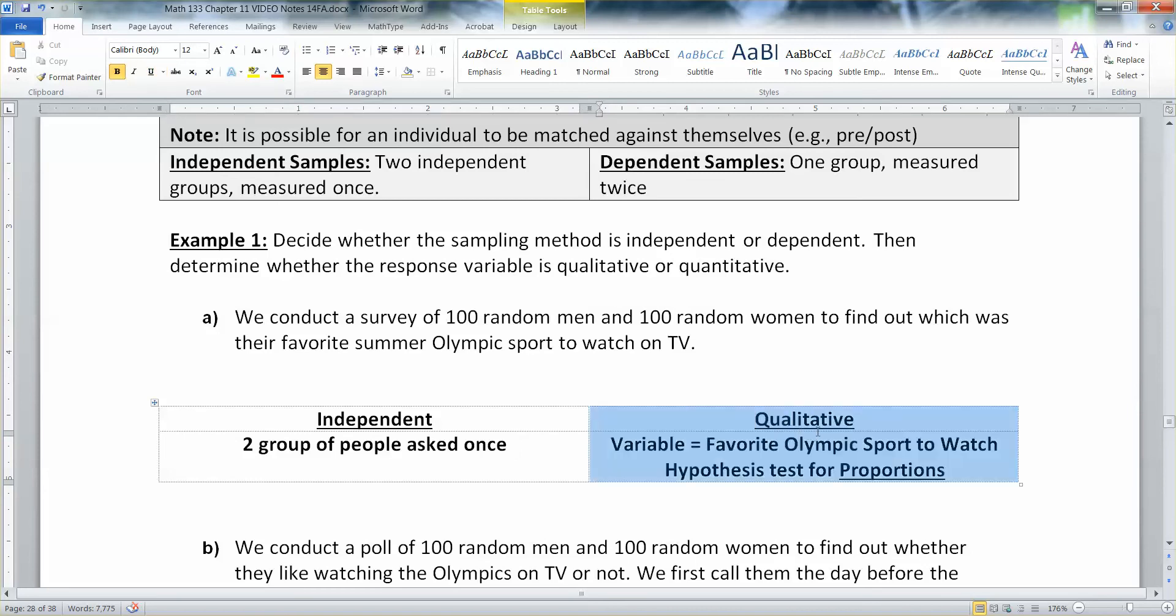This is a qualitative variable here. Because you're asking them, what's your favorite sport to watch? Well, this is in summertime, so gymnastics or swimming or track or whatever. Then the hypothesis test is for proportions. If you're doing qualitative variables, it's for proportions. Quantitative is for means.